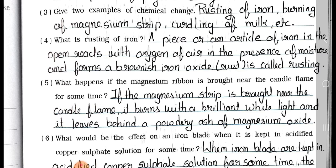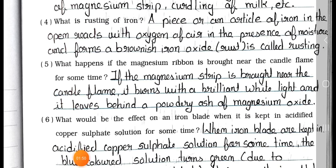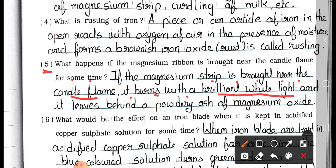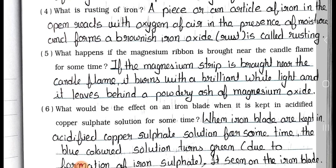Question number 5: What happens if the magnesium ribbon is brought near the candle flame for some time? Answer: If the magnesium strip is brought near the candle flame, it burns with a brilliant white light and it leaves behind a powdery ash of magnesium oxide.